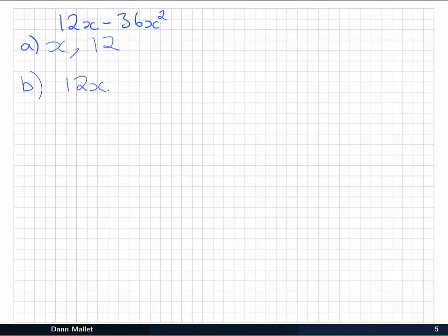Let's just put in there a placeholder for the moment, 12x times 1. Then we've got 36x squared. So remember I said 36 was 3 times 12. And then we've got x squared. Well that's x times x. We can pop a little times in there as well.